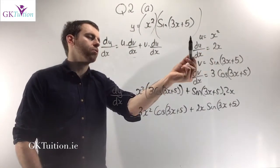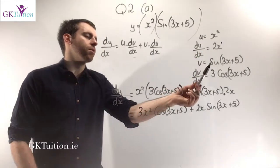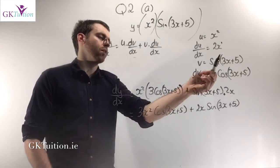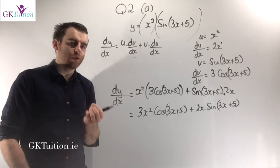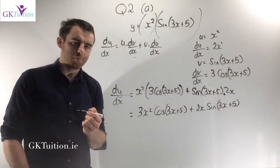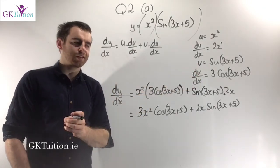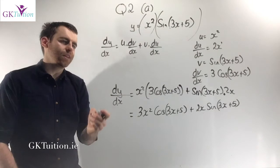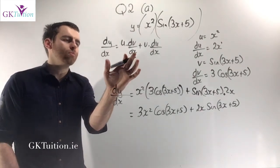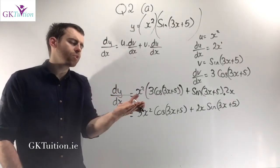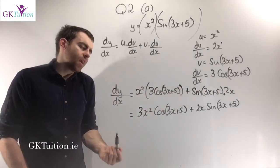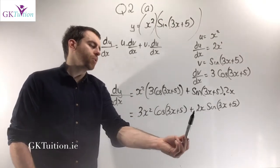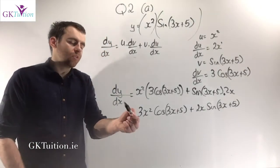u is x squared, so du dx is 2x. v is sine 3x plus 5, and according to page 25 of the maths tables, sine of an angle becomes cos of that angle, so the derivative dv dx is cos 3x plus 5 multiplied by the derivative of 3x plus 5, which is 3. Using the product rule dy dx equals u times dv dx plus v times du dx, giving 3x squared cos 3x plus 5 plus 2x sine 3x plus 5. You can't simplify it much further — that's your final answer.